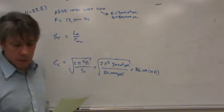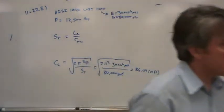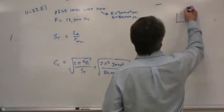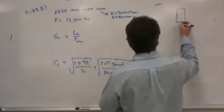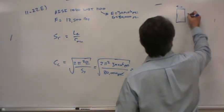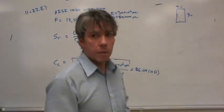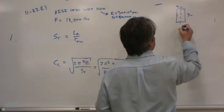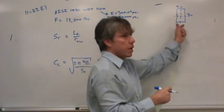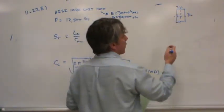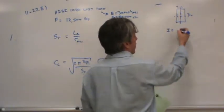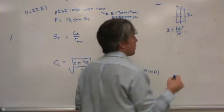So, we need the slenderness ratio which will be the effective length over the minimum radius of gyration. Since this is a round rod, I believe, isn't it? No, it's square. So, which way would it tend to buckle? Let me draw the cross section. The cross section is 2 inches by 3 inches. Which way would this tend to buckle first? About what axis?